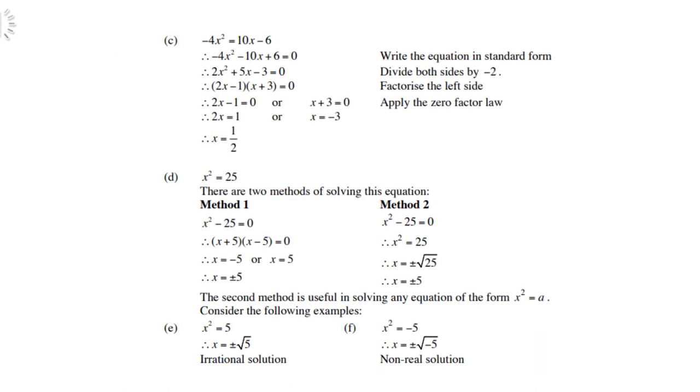Example C: -4x² = 10x - 6. Write in standard form: -4x² - 10x + 6 = 0. Divide through by -2 to get 2x² + 5x - 3 = 0. Factorize: (2x - 1)(x + 3) = 0. Therefore, x = 1/2 or x = -3.